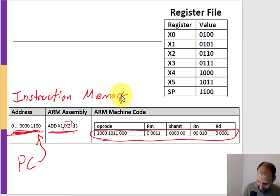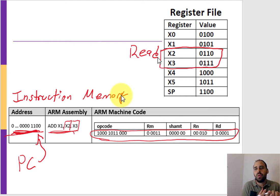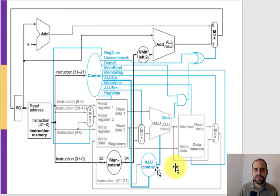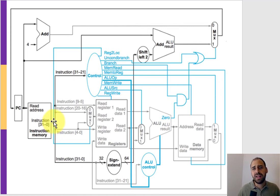We also need to know the state of the register file. There are really only two registers we truly need to know the state of: registers 2 and 3, because those are the ones we're going to read. The other ones don't matter for tracing this instruction. We need to know what's actually stored in those registers to trace what's happening. The best way to understand this single cycle ARM processor is to trace the data path - trace what happens when we run this R-type instruction, looking at what each component does and what the inputs and outputs are.